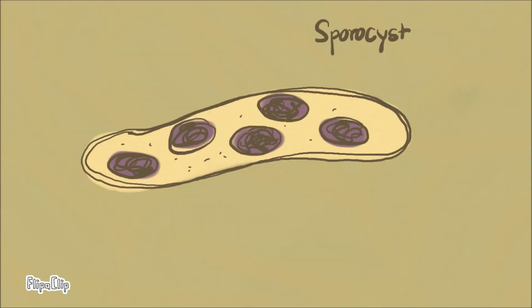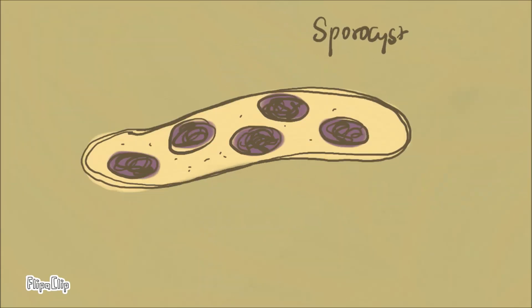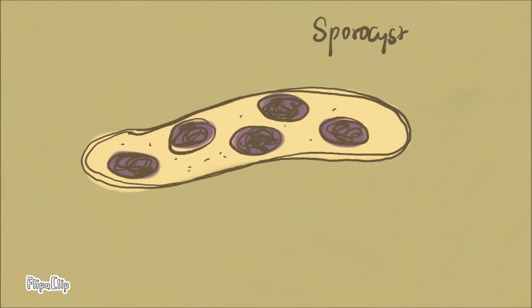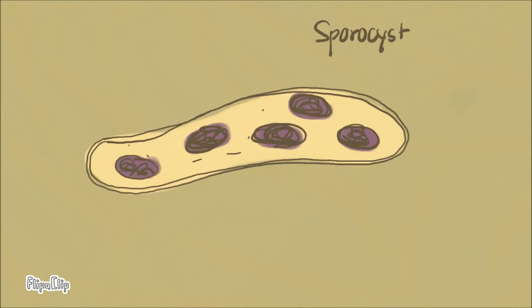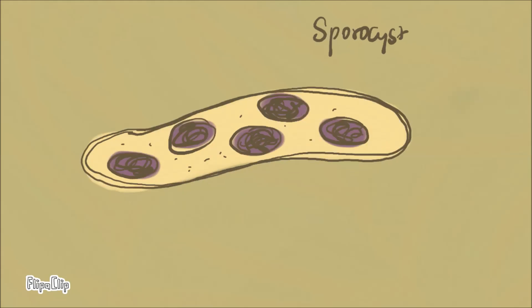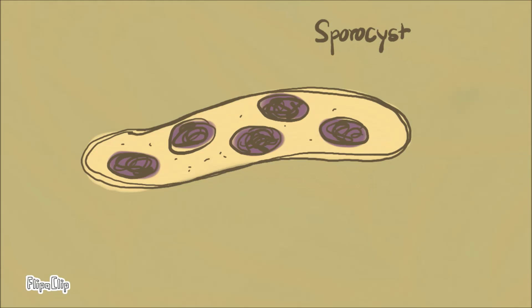Let's discuss these three stages in more detail, starting with sporocyst. It has a sac-like shape with germ cells in it. At this stage, it can divide to form more sporocysts or redia, which are contained in cysts inside the snail's body. The sporocyst has no mouth or gut, but it can absorb nutrients through its body wall.